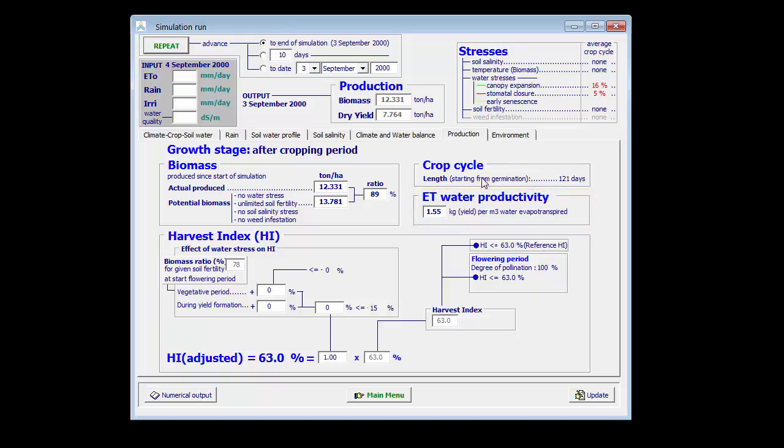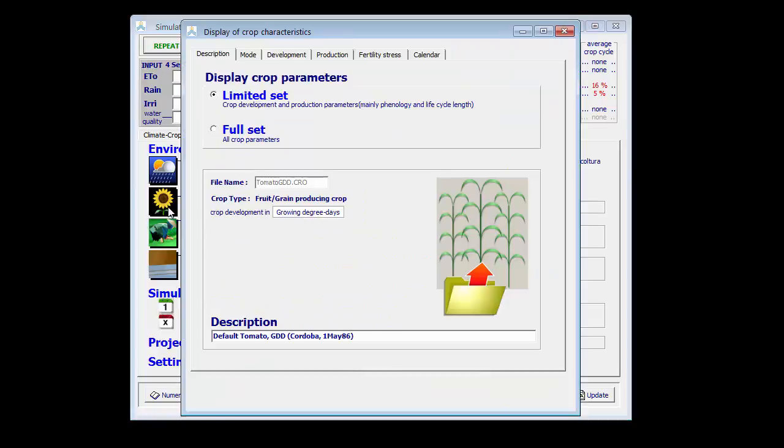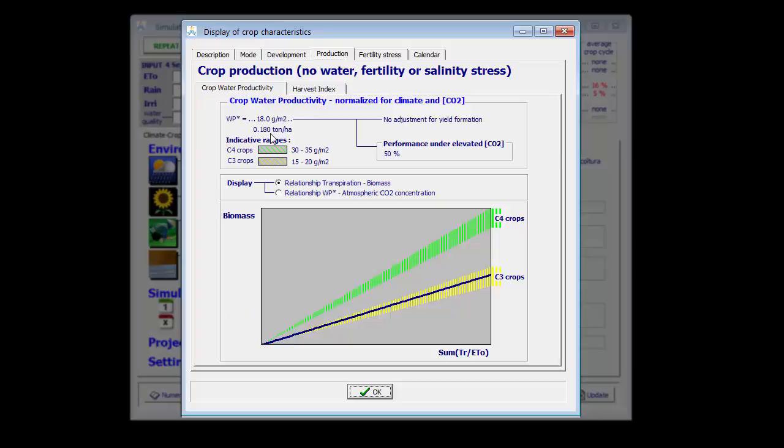The biomass water productivity, however, remains the same, 18 grams per square meter.